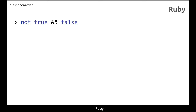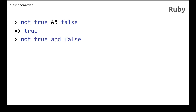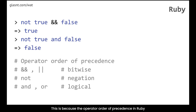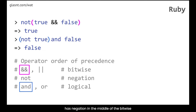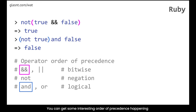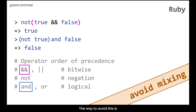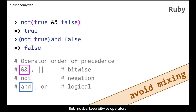Let's talk about Ruby. In Ruby, what is 'not true double-and false'? It's true. What is 'not true and false'? It's false. This is because the operator order of precedence in Ruby has negation in the middle of the bitwise and logical operators, which means that if you mix negation with bitwise and logical operators you can get some interesting order-of-precedence behavior. The way to avoid this is to avoid mixing bitwise and logical operators.